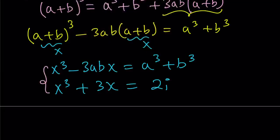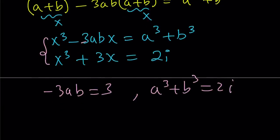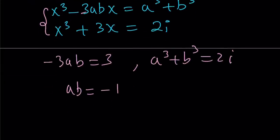Now if you compare this to our equation x³ + 3x = 2i, you'll see a lot of similarities. They both have x³, they both have x. By comparing these two equations, you should notice that we could set -3ab equal to 3, and a³ + b³ equal to 2i. This gives us the following: ab equals -1.